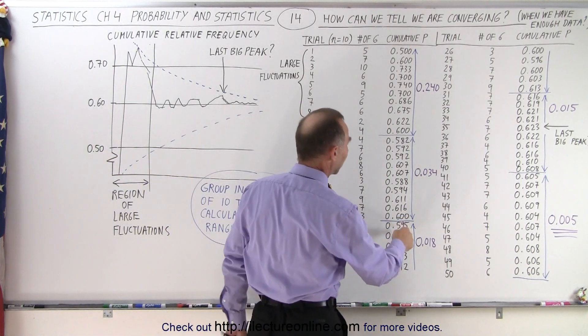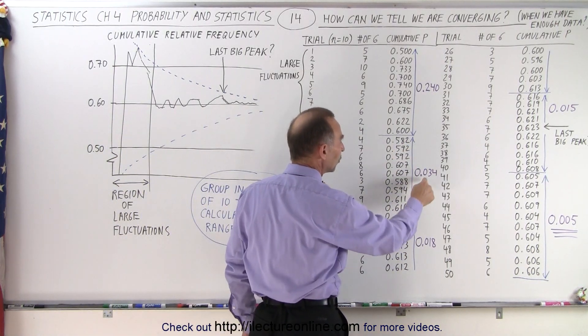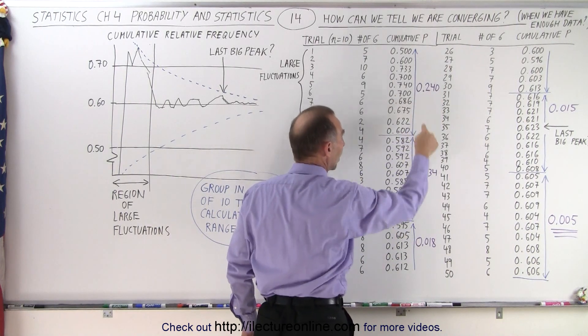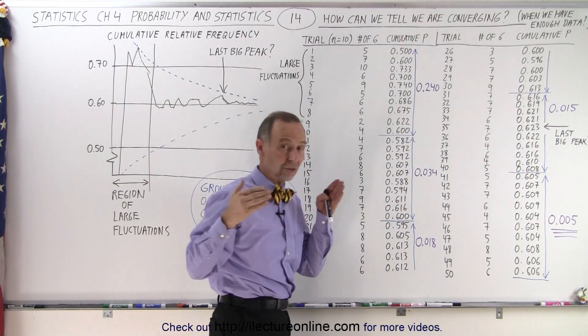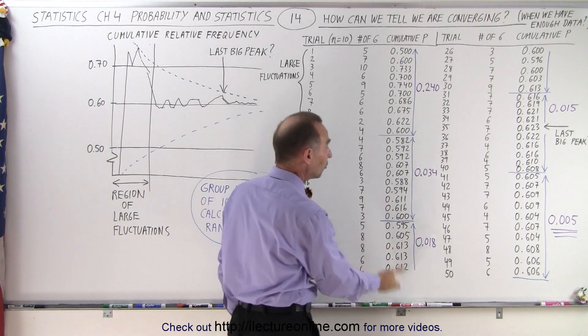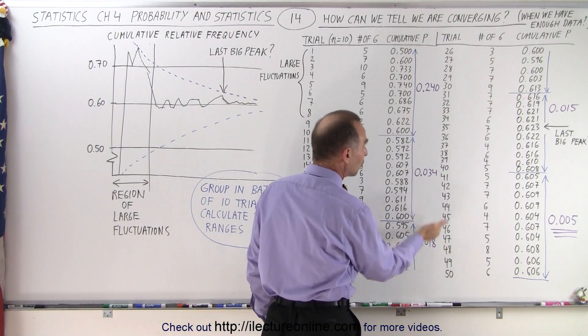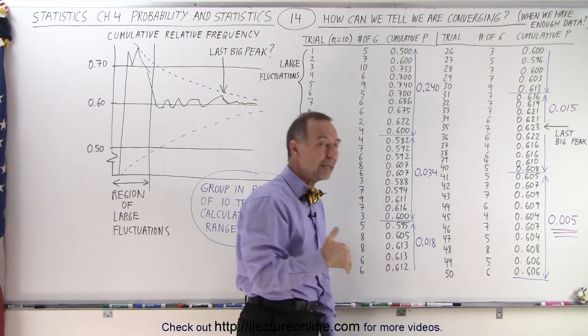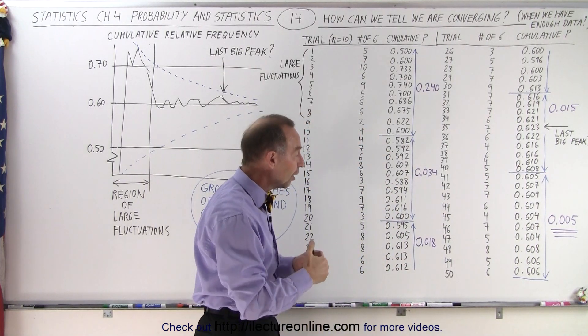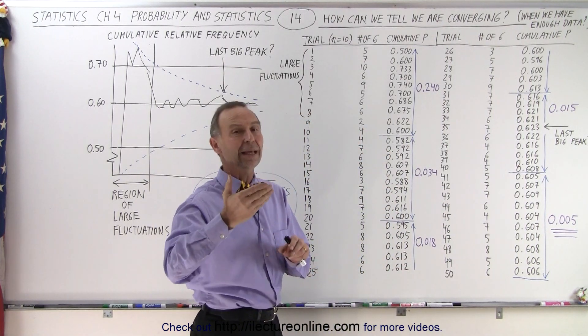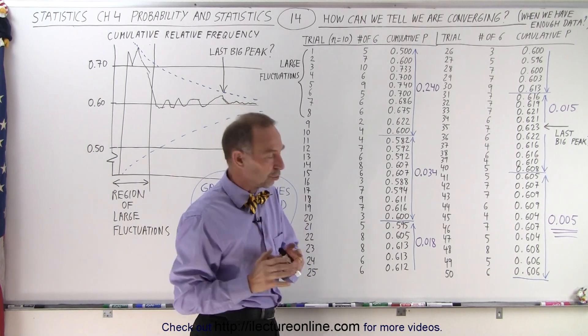Then I looked at the next 10 numbers and again looked for the highest and lowest number, took the difference, and notice it had gone down quite a bit, which means it's really beginning to converge. Then I looked at the third set and again the difference between the highest and lowest value is smaller. You want to keep doing that. If for some reason on the next batch it goes up again, then you know you're not anywhere near convergence yet.